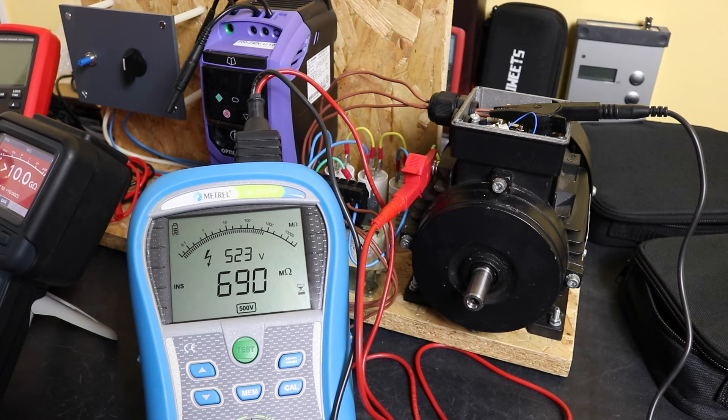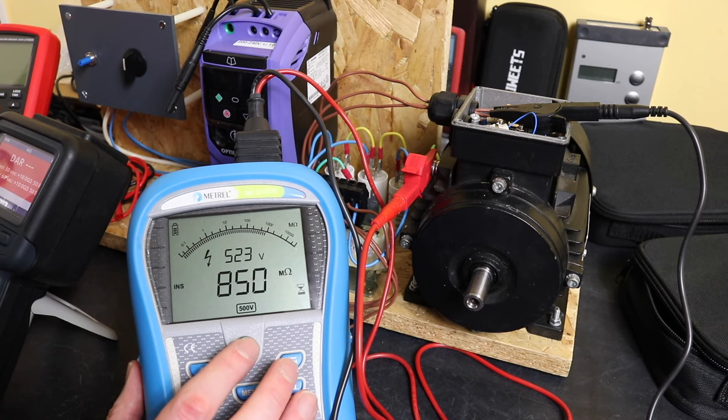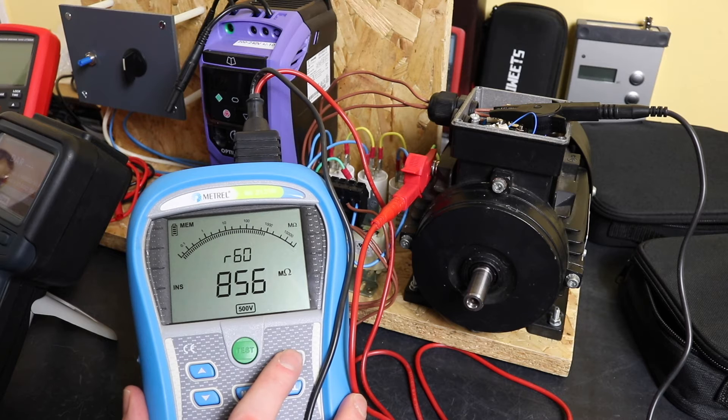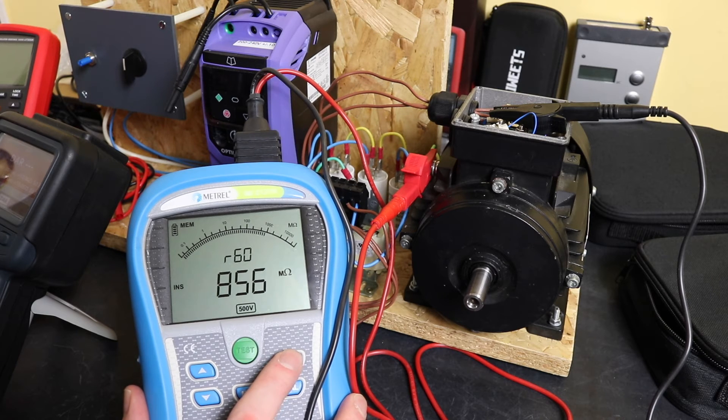There's our 30 second value, 690. 60 seconds was 856 megaohms. There you go, there's that one there.